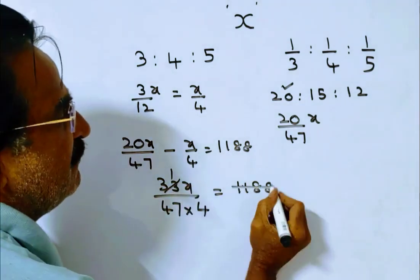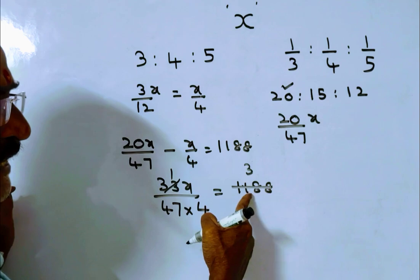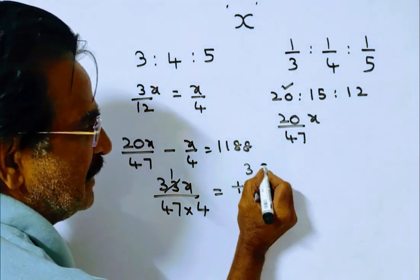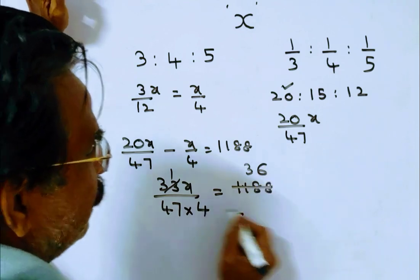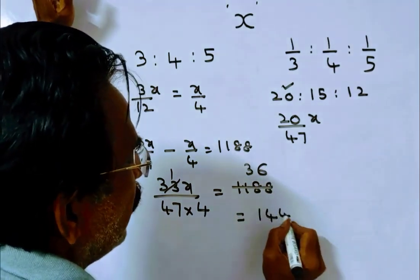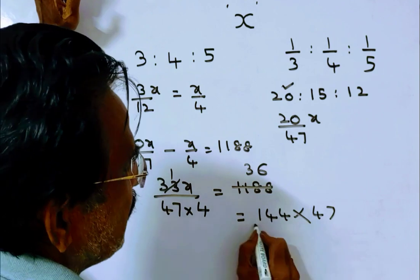33 into 1,188. Friends, 33 times 3 is 99, 119 minus 99, 33 times 6. So this is equal to 36 times 4, 144 into 47.